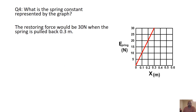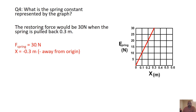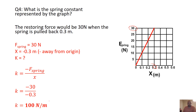What is the spring constant represented by the graph? We take two points: with 30 newtons of force applied, the spring is displaced 0.3 meters. Using the rearranged spring equation — K equals negative force over x — we get K = negative 30 over negative 0.3, giving a spring constant of 100 N/m.